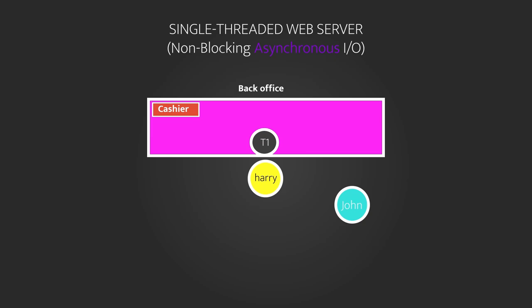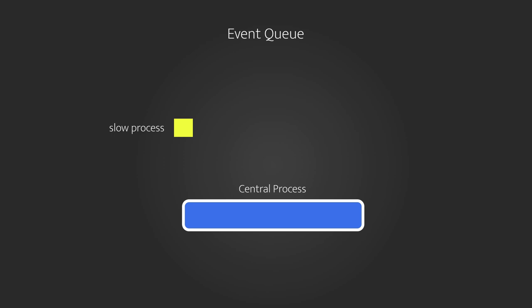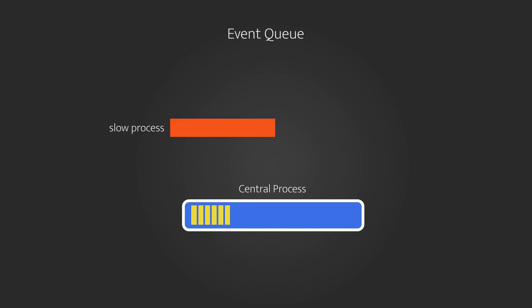Next, we'll talk about how Node handles asynchronous requests. A Node server is single-threaded and works differently from a multi-threaded server. With a single-threaded model, all your users share the same central process. To keep the flow smooth, you need to make sure nothing in your code causes a delay that blocks another operation.